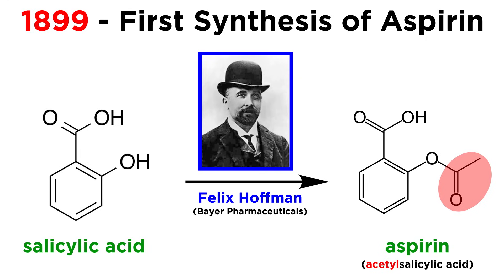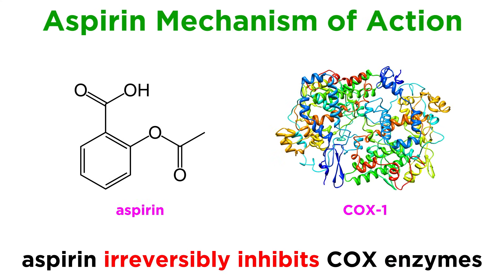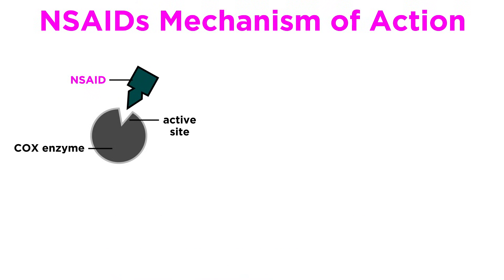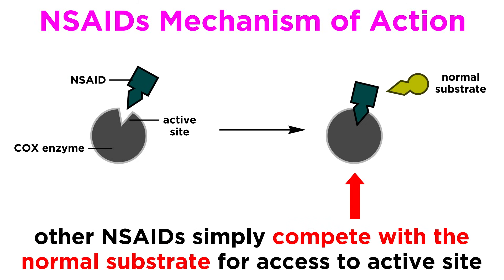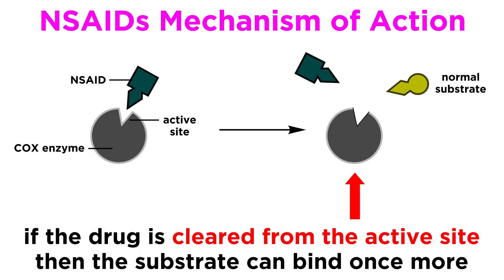The important alteration Hoffman made was the addition of an acetyl group to salicylic acid, generating acetylsalicylic acid, which is the chemical name for aspirin. This modification makes aspirin unlike any other NSAID, because it irreversibly inhibits cyclooxygenase, or COX, enzymes by acetylation. Other NSAIDs inhibit cyclooxygenase enzymes by competing with the enzyme's substrates for access to the active site. In such cases, when the drug has been cleared from the active site, the effect of the drug ceases.